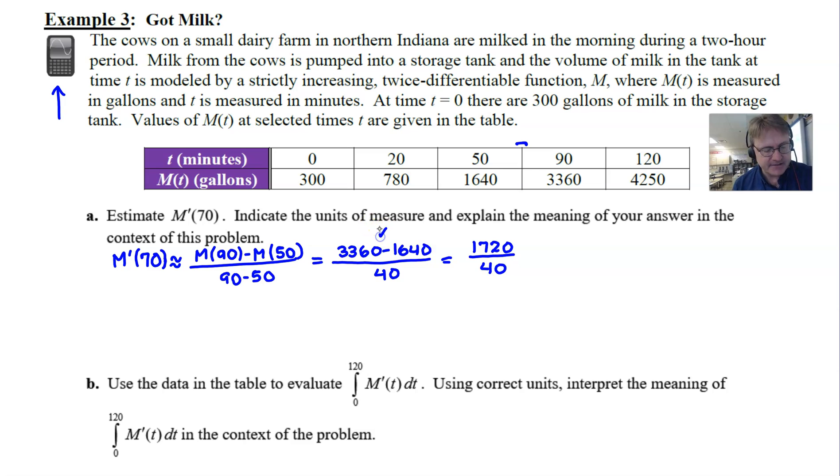Now we can say that that is equivalent to, and we can do our subtraction: 3,360 minus 1,640 and that would be all over 40. Of course, this is a calculator active question and in order to speed up the video I'm not going to type in mundane calculations like this into your calculator. I'm sure that you could get 1,720 fairly easily.